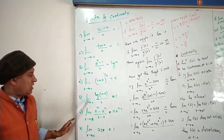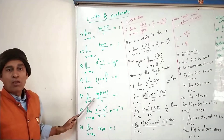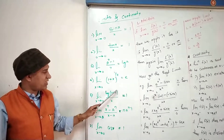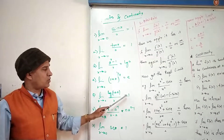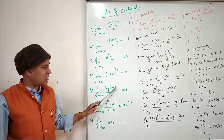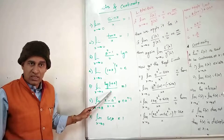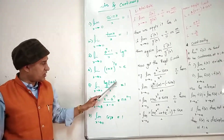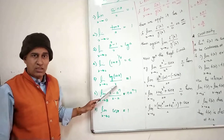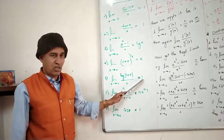Lim x tends to 0, log(1 + x) upon x is equal to 1. The same process applies here — if the argument inside the log is x, then the denominator must also be x. If it is 6x, then the denominator must be 6x as well. Only then can you apply this standard formula.